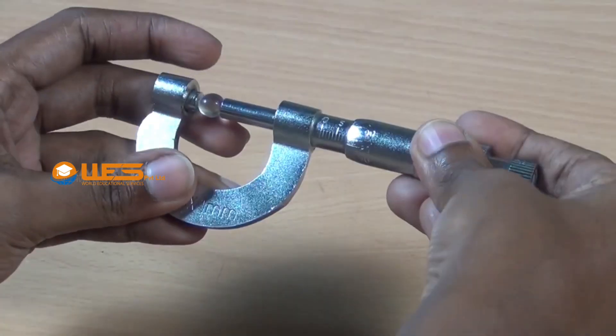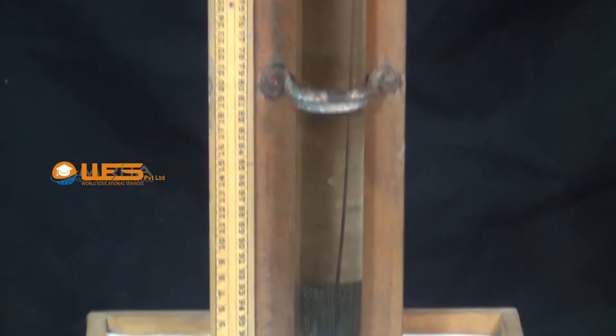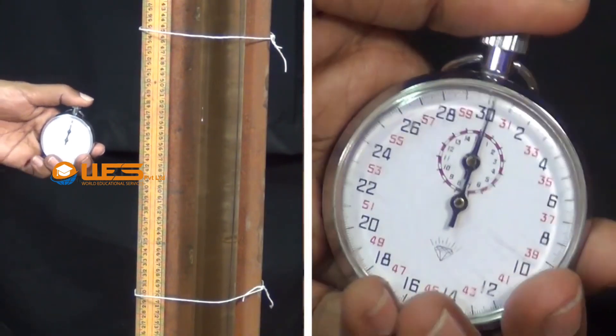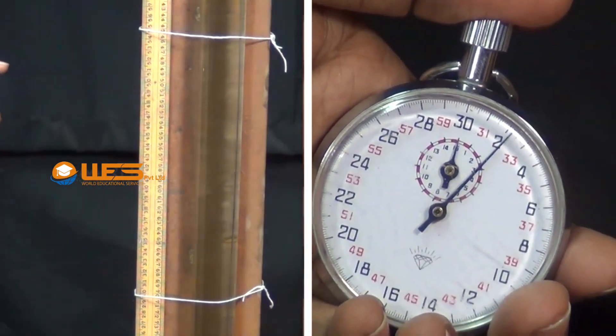Place the first ball whose diameter has been measured gently in the liquid. It falls down in the liquid with accelerated velocity for about one third of the height. Then it falls with uniform terminal velocity. When the ball crosses the point A, switch on the stopwatch and note the time taken by the ball to reach point B.